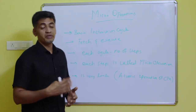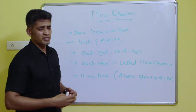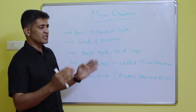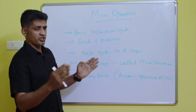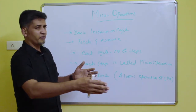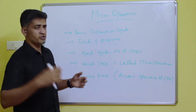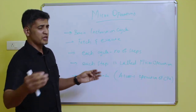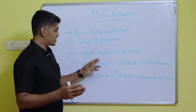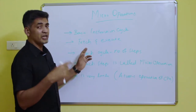In the previous video we discussed pipelining concepts — the stages in instruction execution: instruction fetch, decode, operand fetch, execution, and operand store. These are the five different steps in instruction execution, and those steps are requested for each instruction execution, forming the basic instruction cycle.